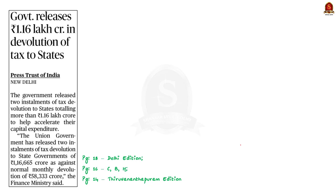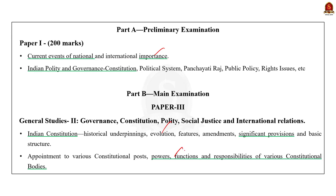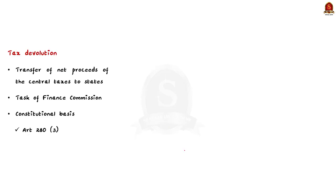This news article says that the central government released two installments of tax devolution to states totaling more than rupees 1.16 lakh crore, done to help accelerate the states' capital expenditure. The government gave 1.16 lakh crore instead of the normal monthly devolution of rupees 58,333 crore. In this context, let us see about the 15th Finance Commission's recommendations on tax devolution.